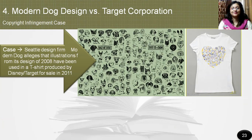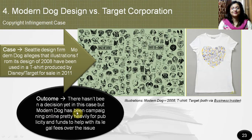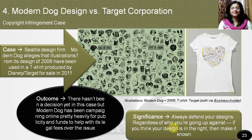Seattle design firm Modern Dog utilized a series of sketches of dogs in their compendium put out by Chronicle Books in 2008. The firm alleges that illustrations from that design were used in a t-shirt produced by Disney for sale and filed a lawsuit in 2011. There hasn't been a decision yet in this case, but Modern Dog has been campaigning online for publicity and funds to help with legal fees. The significance is to always defend your designs, regardless of who you are going up against.